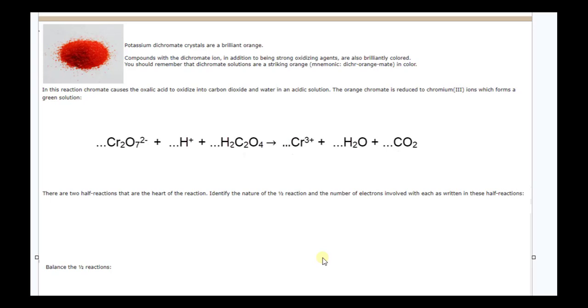This is an oxidation-reduction balancing problem. Let's go over it to see how we can solve it. We've got potassium dichromate crystals which provide us the dichromate polyatomic ion, and in an acidic solution, it reacts with this double acid, oxalic acid, to change into a chromium ion, chromium 3, water and carbon dioxide.